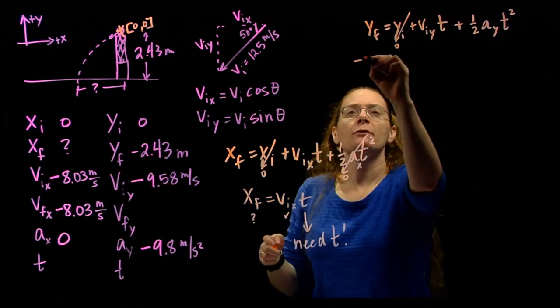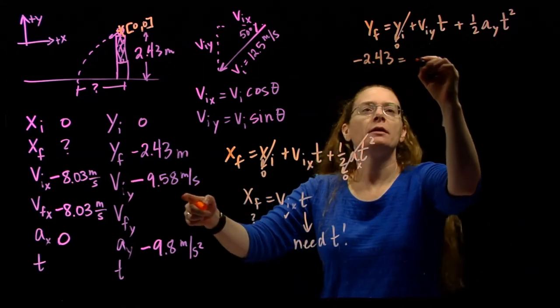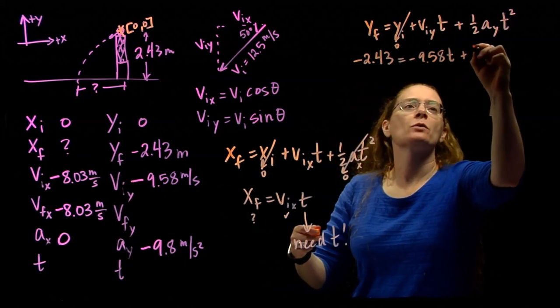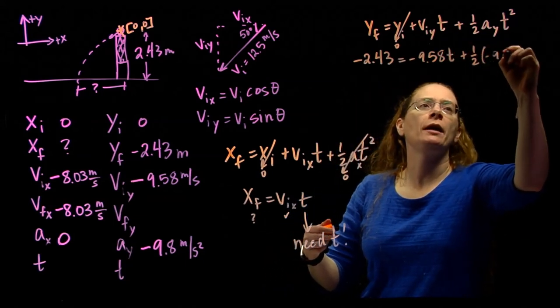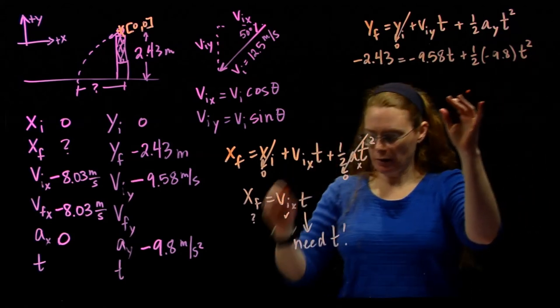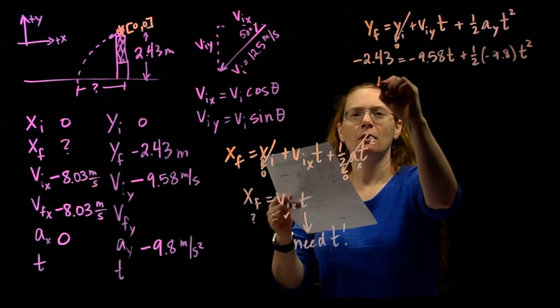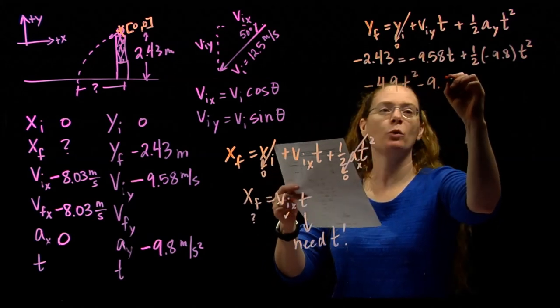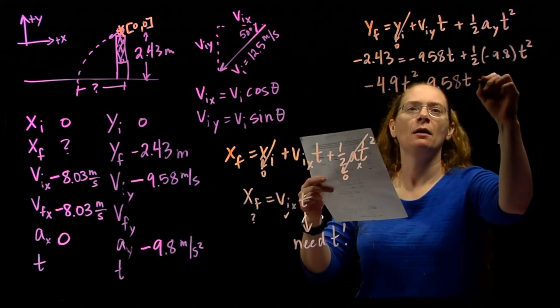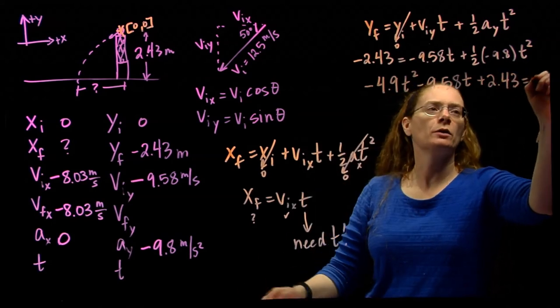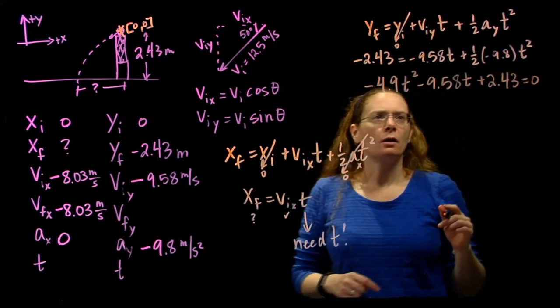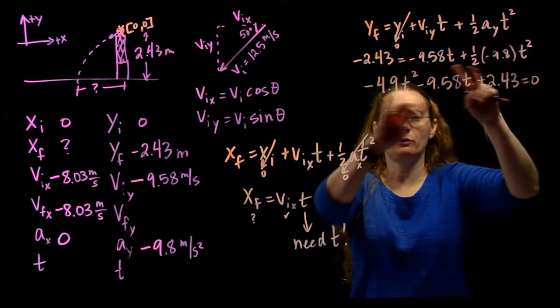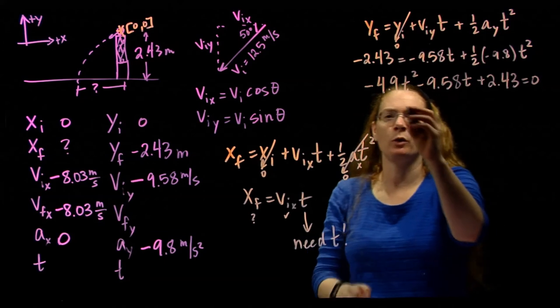That means it's a quadratic again. So let's put the numbers in. Y final is negative 2.43 equals negative 9.58 t plus 1 half negative 9.8 t squared. So if we rearrange this, you should get negative 4.9 t squared minus 9.58 t plus 2.43 equals 0.